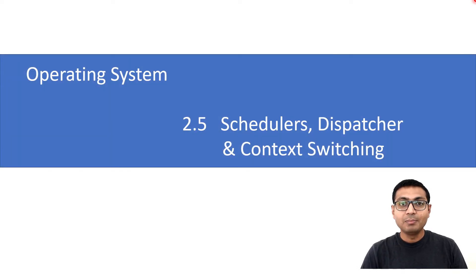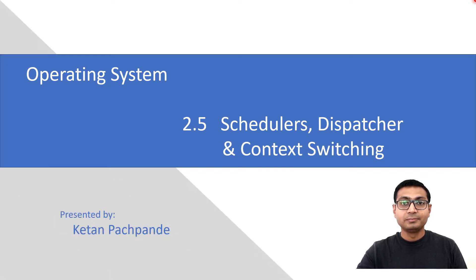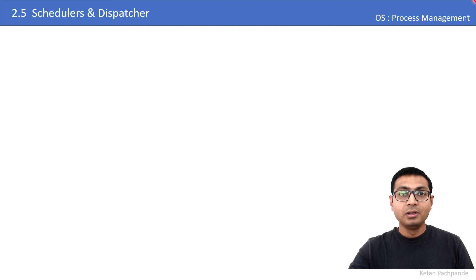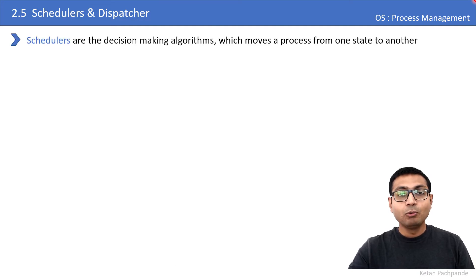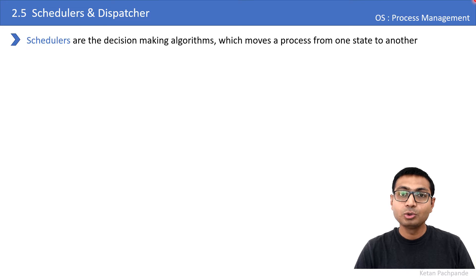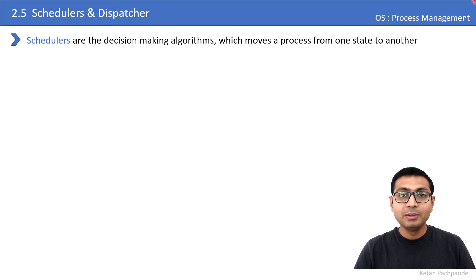Welcome back to the course on Operating Systems. In this session I am going to talk about schedulers, dispatchers, and one very important topic — context switching. Schedulers are the decision-making algorithms which move a process from one state to another. A scheduler decides which process will reside in which state of the state transition diagram.